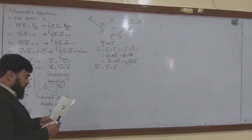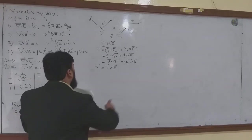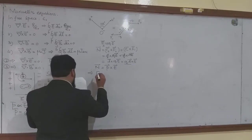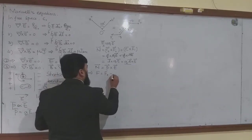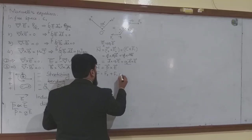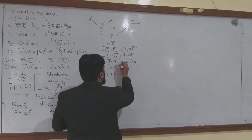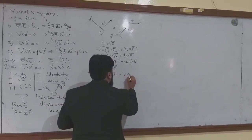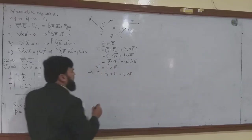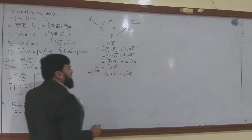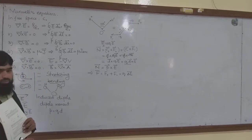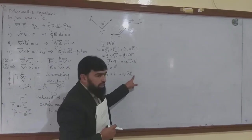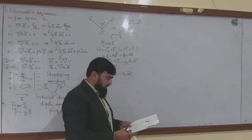Our job is not yet done. We will have to write the net force. The net force will be equal to F, which is the sum of F-plus and F-minus. I can write this as QE-plus plus QE-minus, so I can write it as Q times delta E — the difference between E-plus and E-minus.